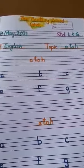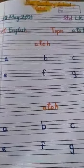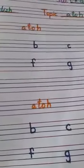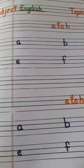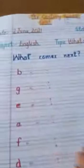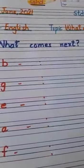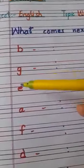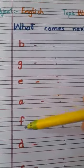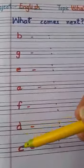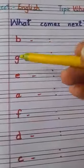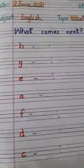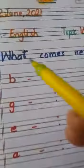Okay, now we will do the exercise. See students, these are small letters: B, G, E, A, F, D, C. These are the given letters. Now we will write what will be the next letter.